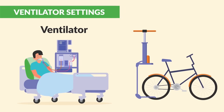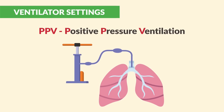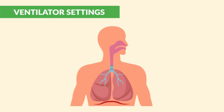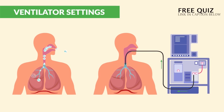Just like pumping air into tires on a bicycle, we're pumping air into the lungs. This is called PPV — positive pressure ventilation — which is very different from normal breathing. In normal breathing, the diaphragm and lungs use negative pressure to bring in oxygen, rather than having it pushed in from positive pressure.